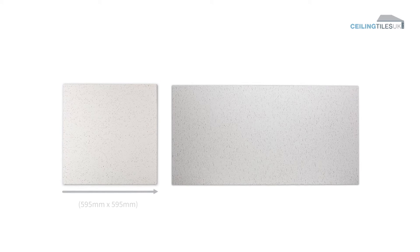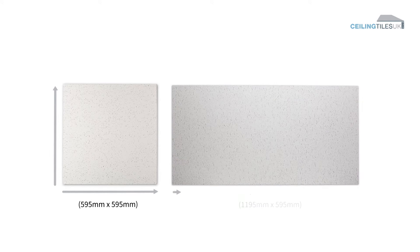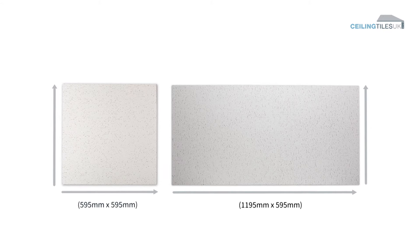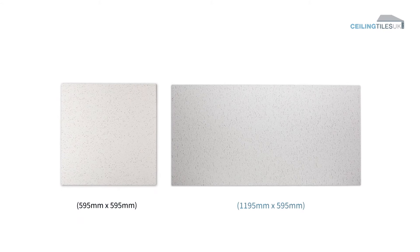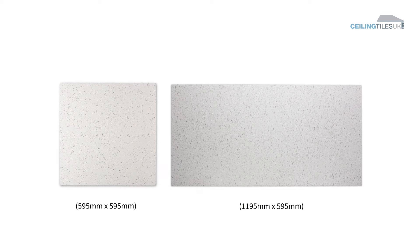Step 1: Size. Firstly, you must decide which size tile is most suited to your ceiling. This will either be a square tile, which are approximately 600 mm by 600 mm, or a rectangular tile, which are 1200 mm by 600 mm. The actual size of the tiles is fractionally less to allow them to fit easily into the grid.